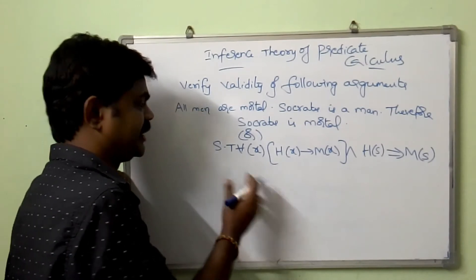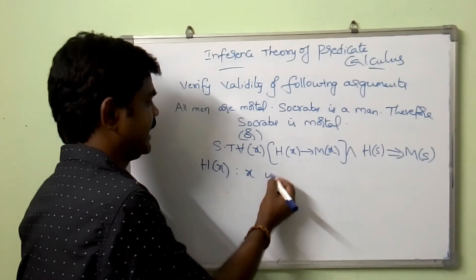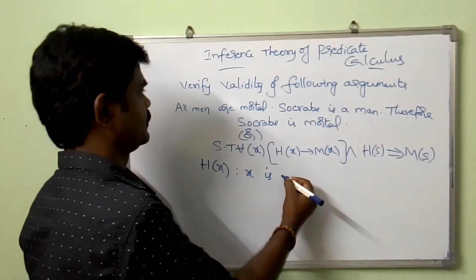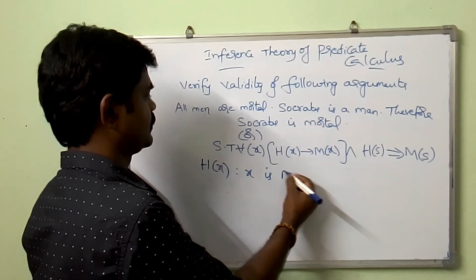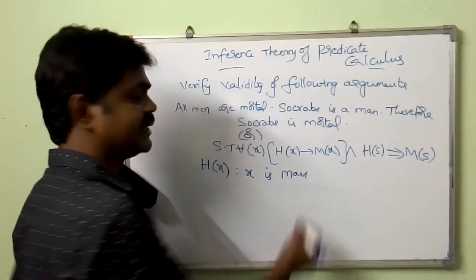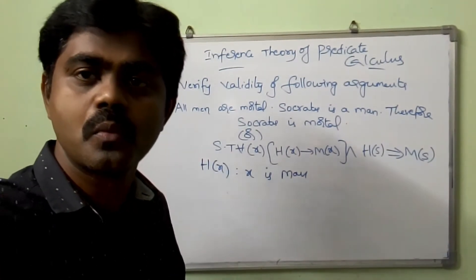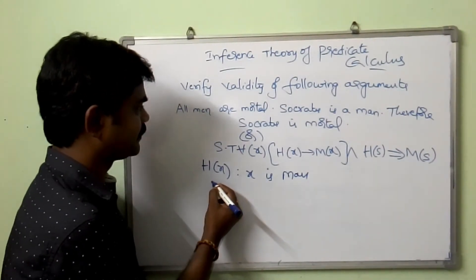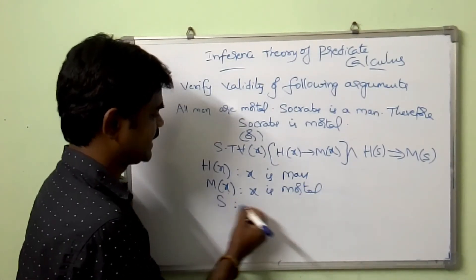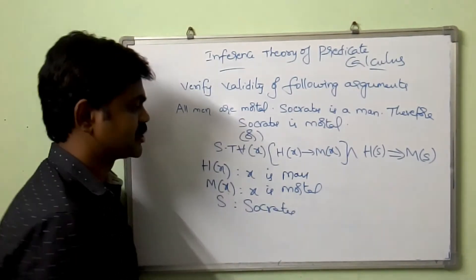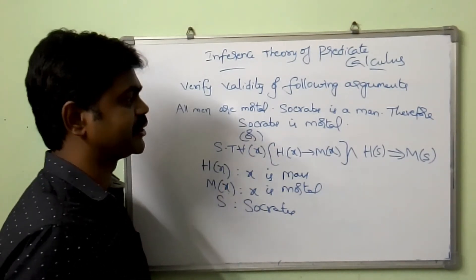So here, in order to solve this, first let us define our predicates. H(x) means x is a man, M(x) means x is mortal, and S is nothing but Socrates. So H(x) means x is man, M(x) means x is mortal, and S is Socrates. So finally, we should conclude M(S).